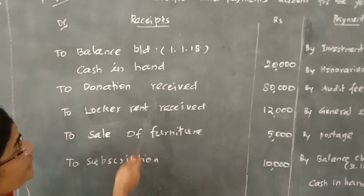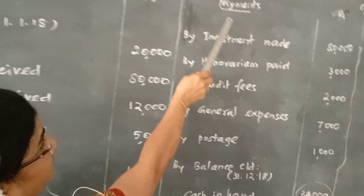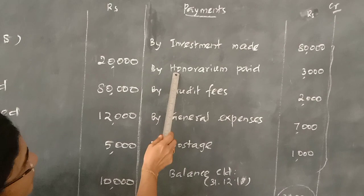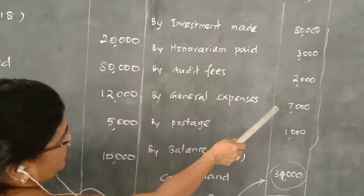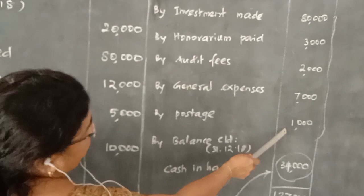Next, you have to write the payment side. Investment made 80,000. Honorarium paid 3,000. By auditor fees 2,000. General expenses 7,000. Postage 4,000. Next one, postage 1,000. Now you have to enter these for the payment side.